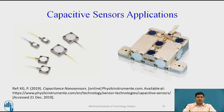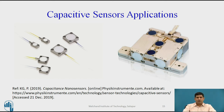One application is in very high precision measurement. Physik Instrumente is a renowned manufacturer of high-tech precision instruments involving nanoscale measurements, and this is one example of capacitive sensors used as nanosensors for nanomeasurements. The picture on screen also gives an idea of how these sensors look and how they are packaged.